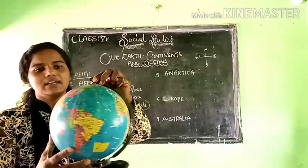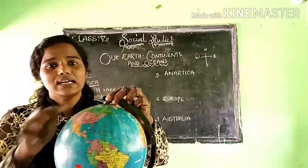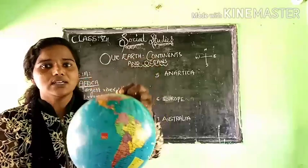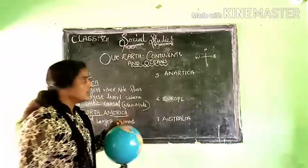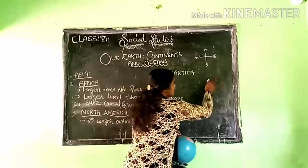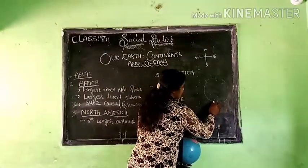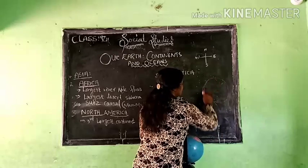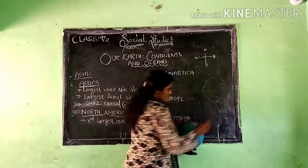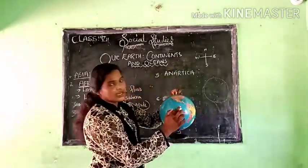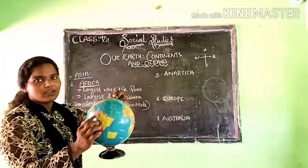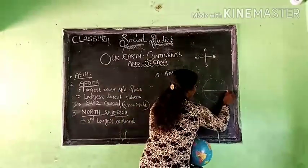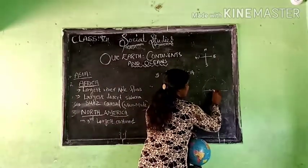North America is in the Northern Hemisphere. Do you understand the word hemisphere? In the globe, you can see a middle line — this midline is known as the equator. The equator divides North and South.